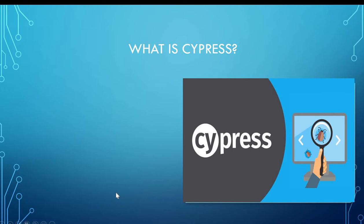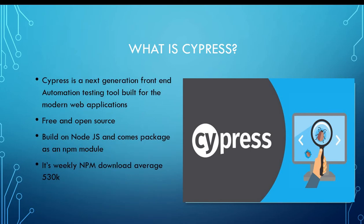So the first question: what is Cypress? Cypress is a next-generation front-end automation testing tool built for the modern web application. If your application is based on web — like it's built on React, JavaScript, or Node.js — any application based on web, Cypress can help you automate your application end-to-end. It can do unit testing, integration testing, or end-to-end testing. It's free and open source, similar to other automation tools like Selenium, but very powerful.